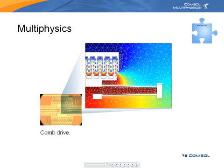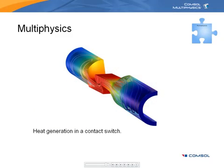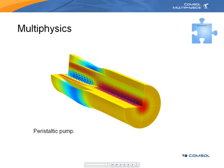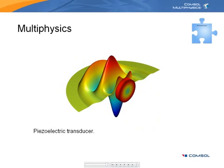In many cases, structural deformation is caused by physics that result from other natural phenomena, such as electromagnetism, heat transfer, or fluid mechanics. Another common situation is when the stress level or deformation of a body influences these other phenomena. To accurately model these situations, the laws that govern the different fields of physics need to be combined and solved together. This defines a multi-physics model.